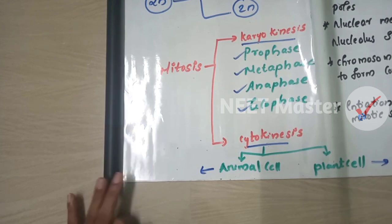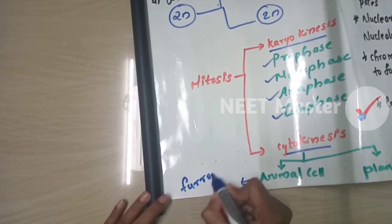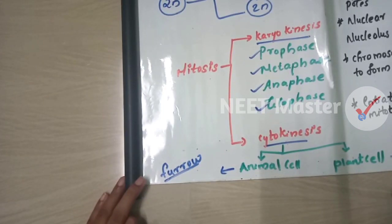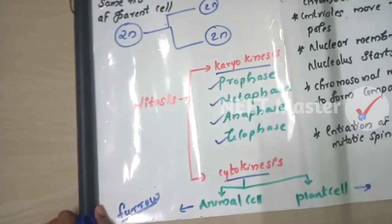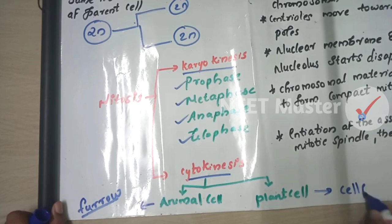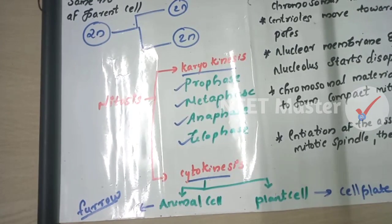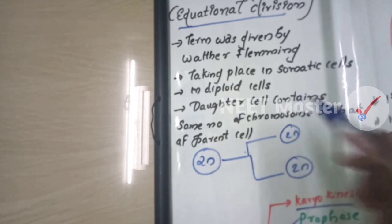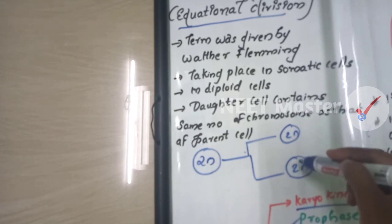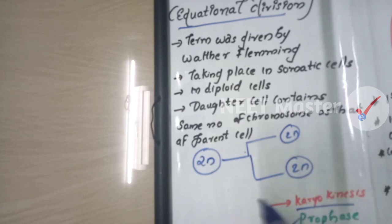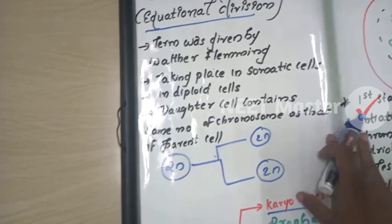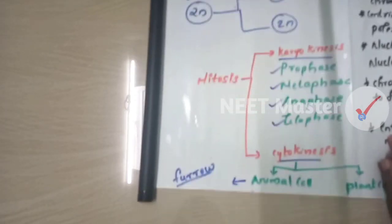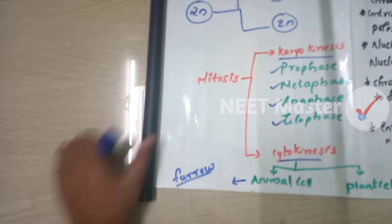In animal cells, cytokinesis occurs by furrowing — a constriction forms at the periphery. In plant cells, cytokinesis occurs by formation of a cell plate. When you complete mitosis, the chromosomes remain the same. Karyokinesis and cytokinesis: karyokinesis has prophase, metaphase, anaphase, telophase; and in plants, cytokinesis occurs via a cell plate.